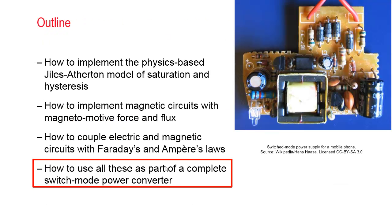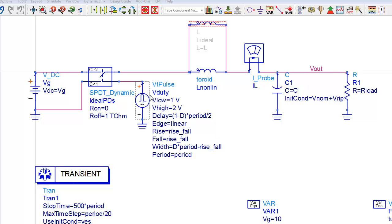In this last section, I'll show you how to use all of these parts as part of a complete switch-mode power converter. This ideal buck converter has ideal power devices, an ideal smoothing capacitor and a load. I've disabled the ideal inductor that comes built in with ADS and replaced it with this non-linear inductor that has saturation and hysteresis.